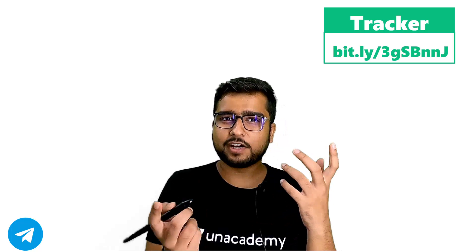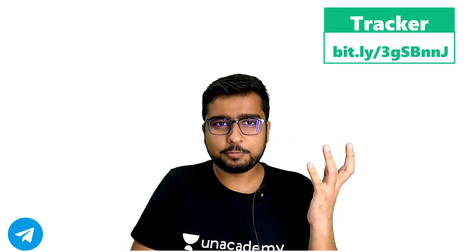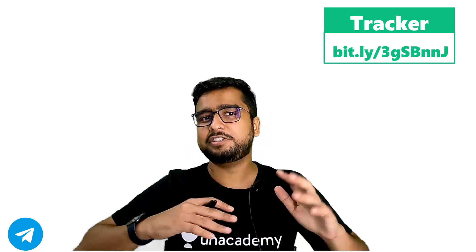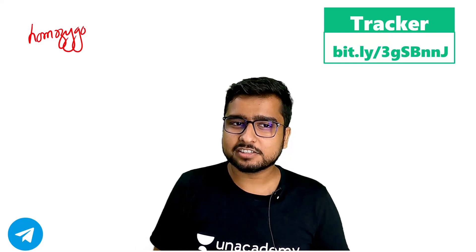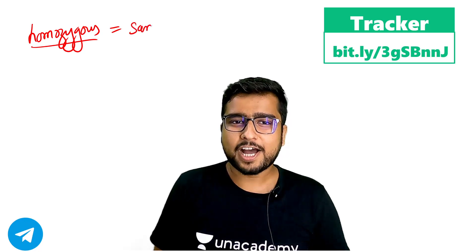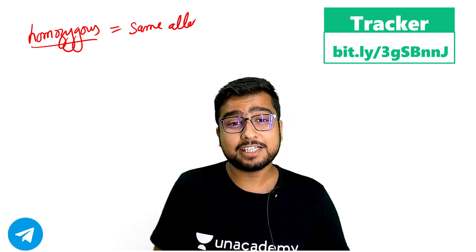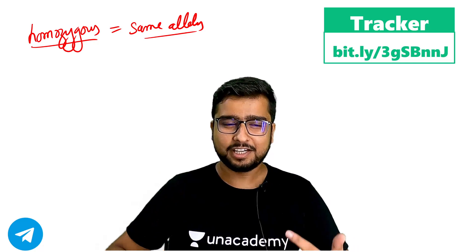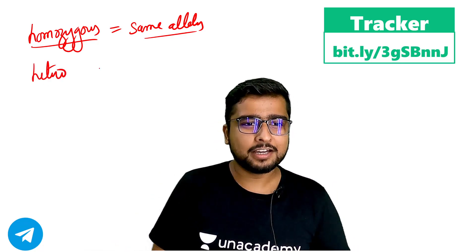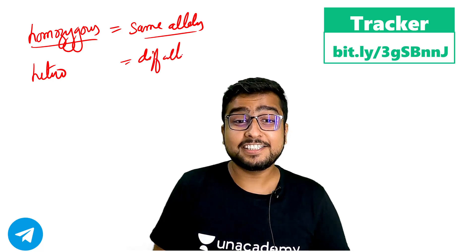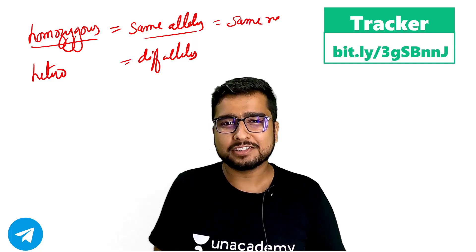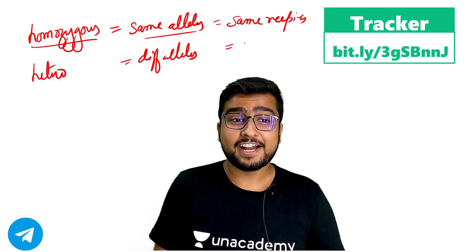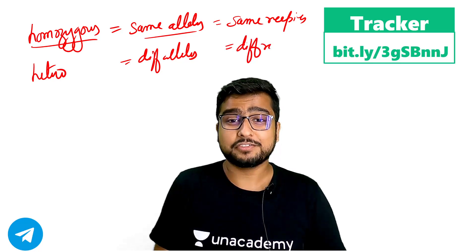Imagine if my father and mother were both Tamilians — agar Papa aur Mom dono Tamilian hote, toh dono ne mujhe same recipes di hoti — Tamilian Palak Paneer ki. In that case we could be homozygous. Homozygous ka matlab — you have the same alleles, you have the same recipes. And heterozygous means you have the different alleles — you have the different recipes.